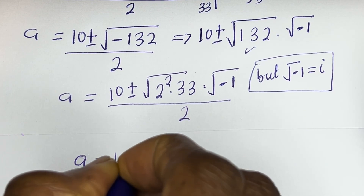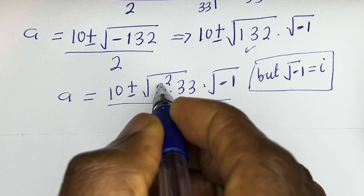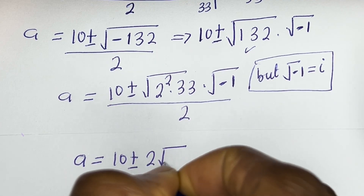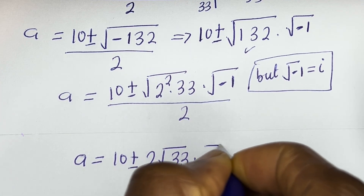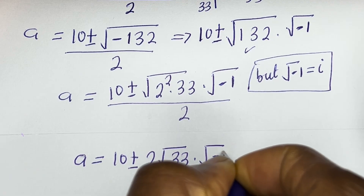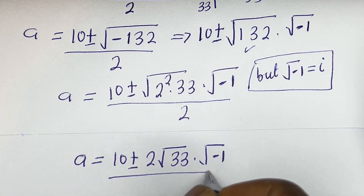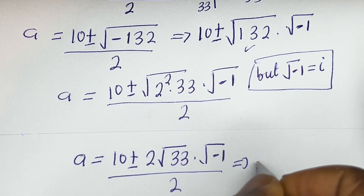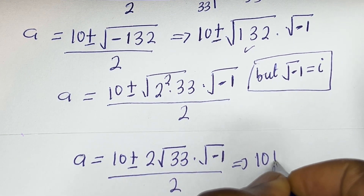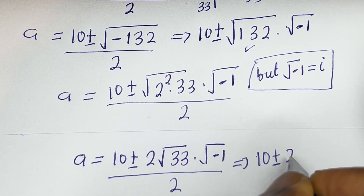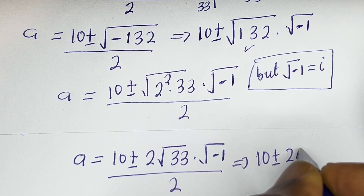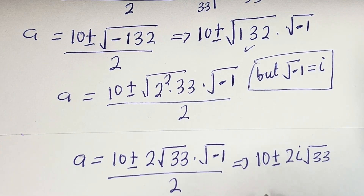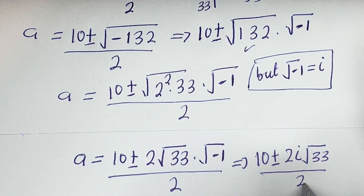So a is equal to 10 plus or minus the square root of 2 squared, which is 2, multiplied by square root of 33, multiplied by square root of minus 1, all over 2. This gives 10 plus or minus 2i square root of 33, all over 2, which simplifies to 5 plus or minus i square root of 33.